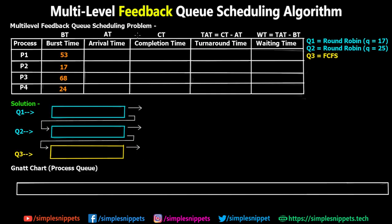We have a numerical with four different processes P1, P2, P3, and P4, with burst times in milliseconds: P1 is 53ms, P2 is 17ms, and so on. For simplicity, assume all arrival times are at zero milliseconds. We need to calculate completion time, turnaround time, and waiting time for all processes. We have three queues: queue one and queue two use round-robin, with queue one having a quantum of 17 and queue two a quantum of 25. Queue three uses FCFS.